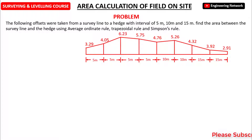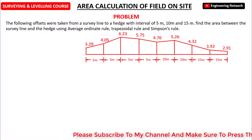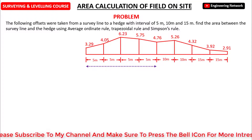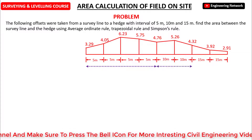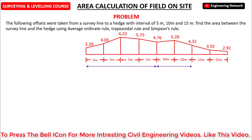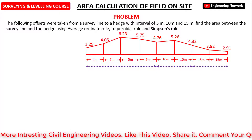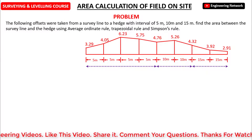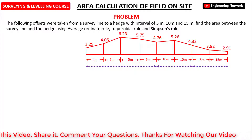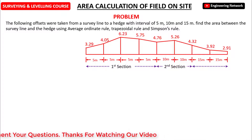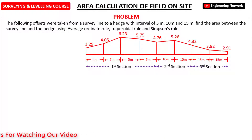Looking at the statement of this question, we have three different intervals. The 5m interval starts from offset 0m to offset 20m, the 10m interval starts from offset 20m to offset 40m, and the 15m interval starts from offset 40m to offset 70m. I will name these the first, second, and third sections respectively. This means I have to calculate the area of each interval separately and then add them to get the total area of the field.